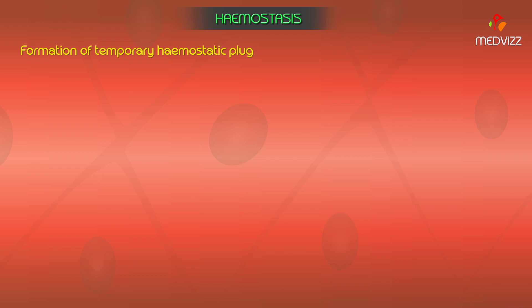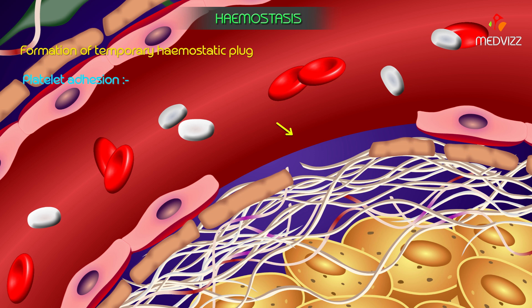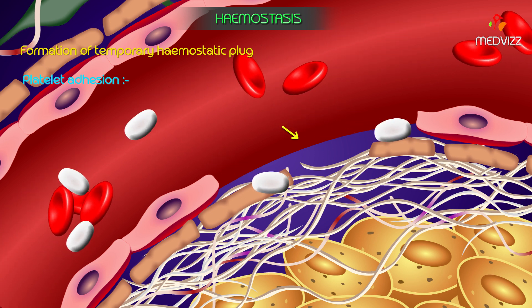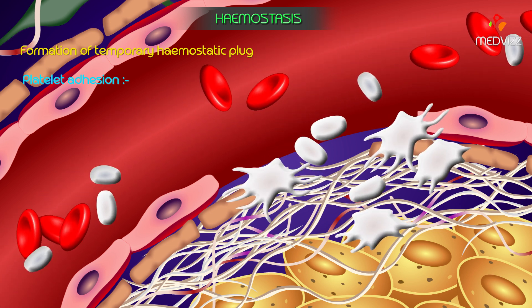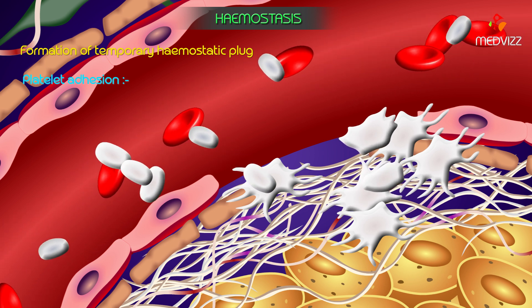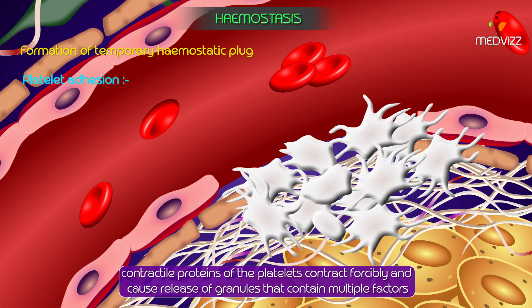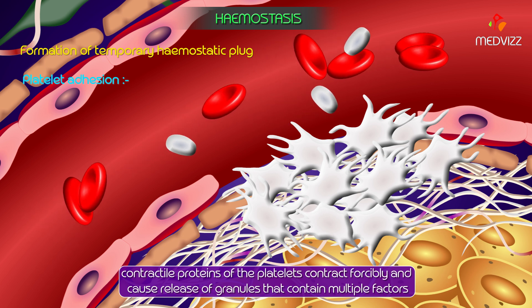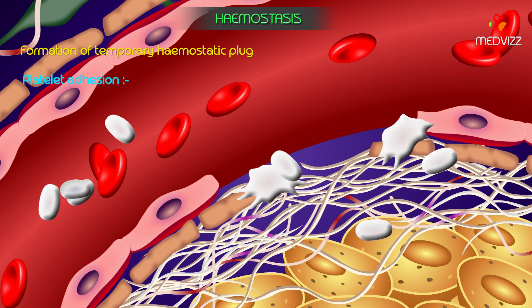Formation of a temporary hemostatic plug by the platelets at the site of injury involves platelet adhesion. Following injury, platelets come in contact with the damaged collagen fibers and endothelial cells of the vessel wall. They begin to swell and assume irregular forms with large numbers of pseudopodia protruding from the surface. The contractile proteins of the platelets contract forcibly, causing release of granules containing multiple factors, and the platelets become sticky and adhere to the damaged collagen and endothelium.